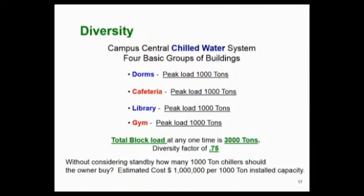It's a real simple concept, and let's say we've got a central chill water plant with a dorm with a thousand ton load, cafeteria with a thousand ton, library with a thousand ton, and a gym. So if you add up the individual loads, it's 4,000 tons. But if you ran a block load, look at all those four buildings at any one time, and the peak block load of those four buildings is 3,000 tons. Now by my definition, that's a diversity factor of 0.75.